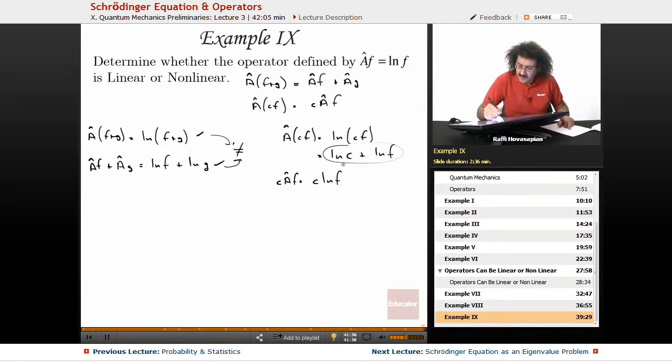Okay, this and this, they are not equal. This is not a linear operator. Not a linear operator.